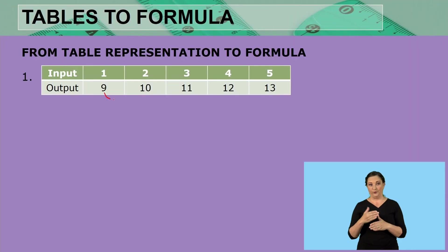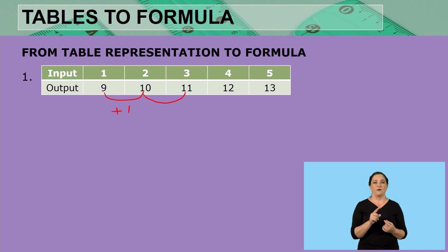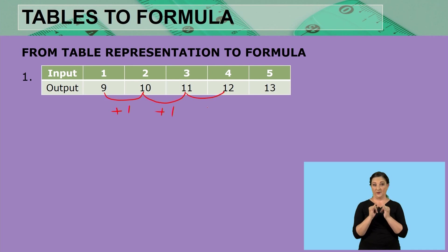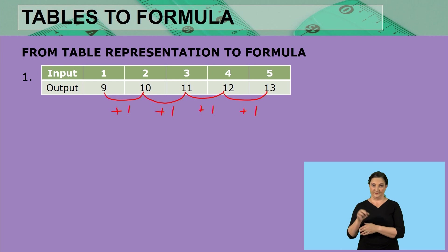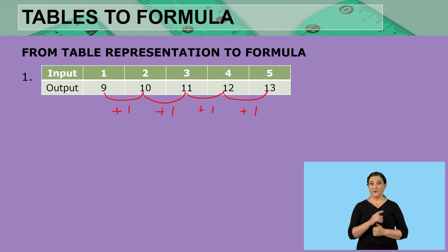From 9 to 10 we are adding 1. From 10 to 11 we are adding 1, and from 11 to 12 we are adding 1. The same thing from 12 to 13 — we are adding 1. So how can we present this in a formula? What is the rule that is applying here?